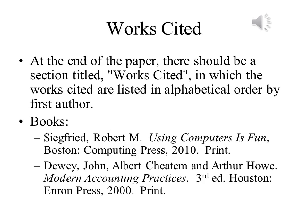MLA style specifies that the works cited are at the end of the paper. What we see here is the listing for two different books. The first book has a single author, with last name first, then the title of the book in italics without quotation marks around it. This is followed by the city in which the publisher is located, the name of the publisher, and the year that it was published. Lastly, we indicate that this is a work in print.